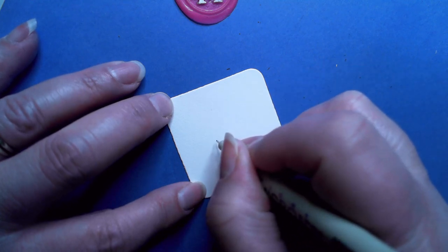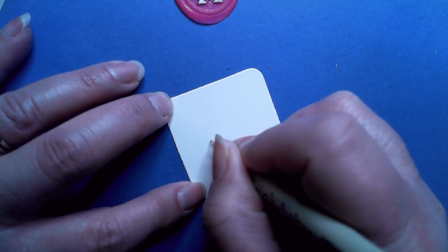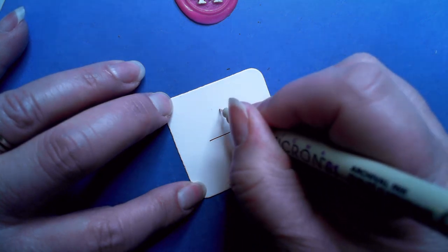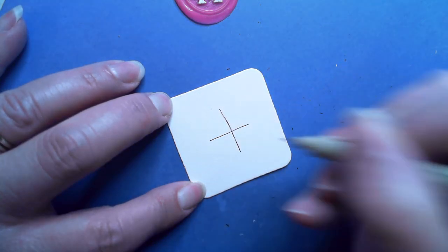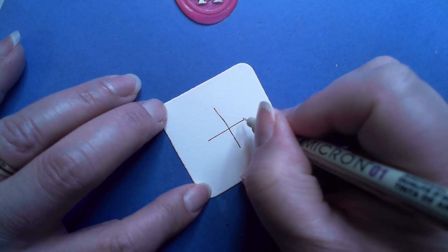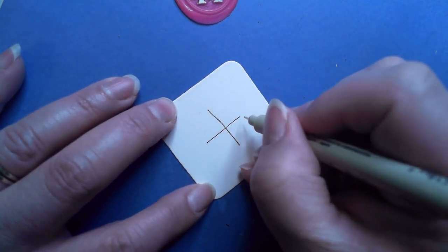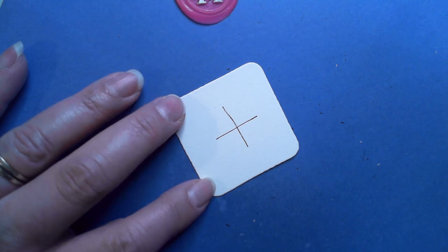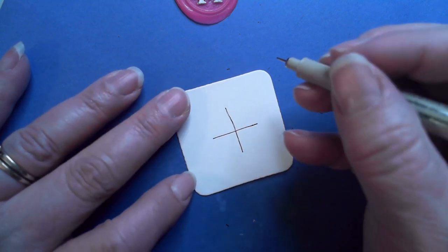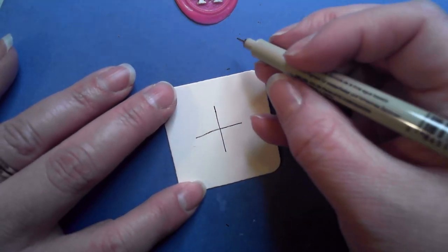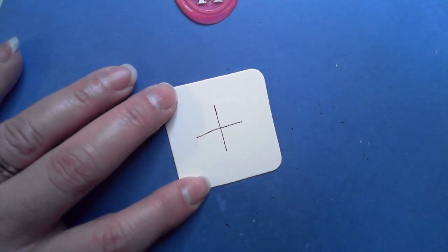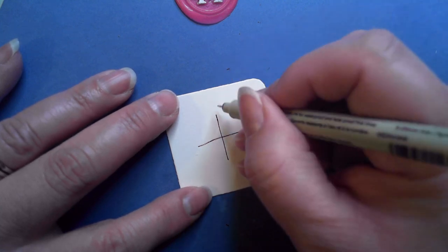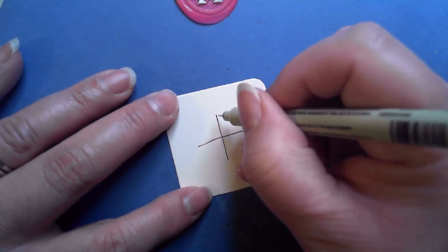This one starts off with just a cross. I'm trying to see how center I get. Some are long and some are short. After you place your cross, then we're going to do a series of, it's kind of like two sets of C-shaped curve lines, in between these spokes.